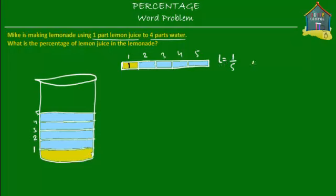How about water? The water is one, two, three, and four parts. So the fraction that water represents in the lemonade is four out of five — four parts water out of a total of five parts. So the lemonade has one-fifth lemon juice and four-fifths water.